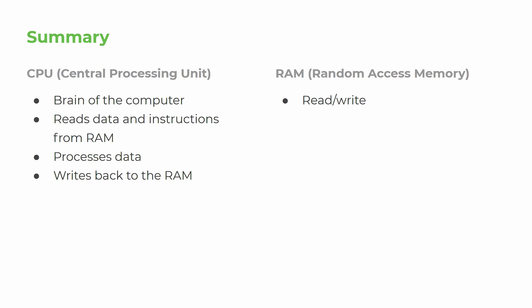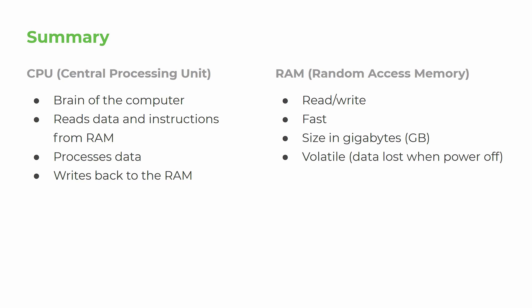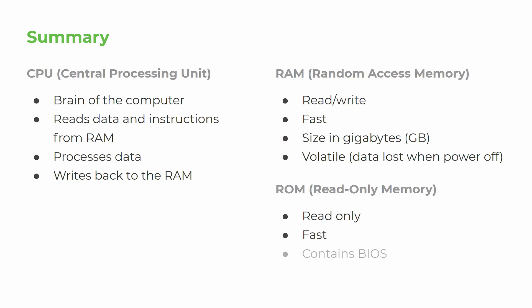RAM — random access memory — allows the computer to both read and write. It's very fast, measured in gigabytes, and it's volatile, meaning data is lost when the power is switched off. ROM — read-only memory — is read-only, also very fast, and contains the BIOS. It's non-volatile, meaning the data is persistent: turn the power off and the BIOS is still on the ROM. Now you know what happens when you press the power button on your computer — thanks for watching!